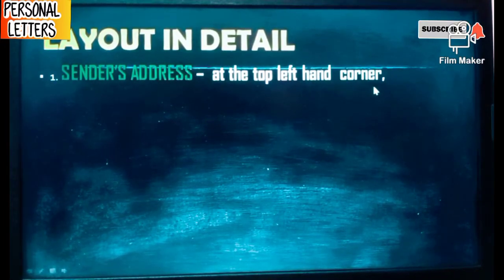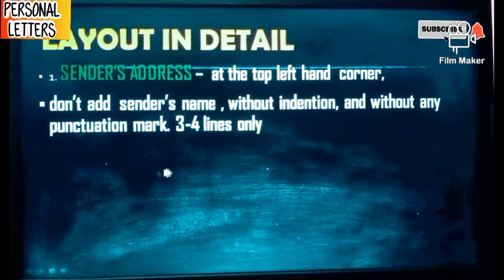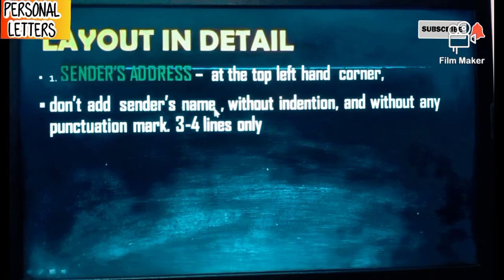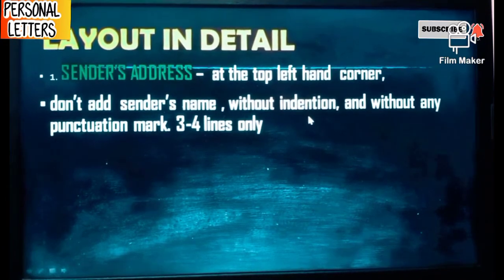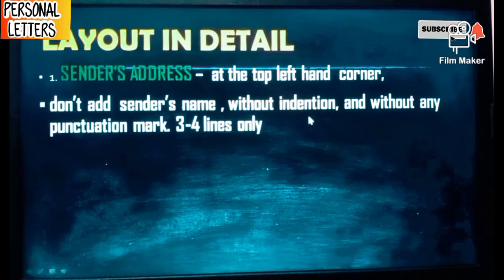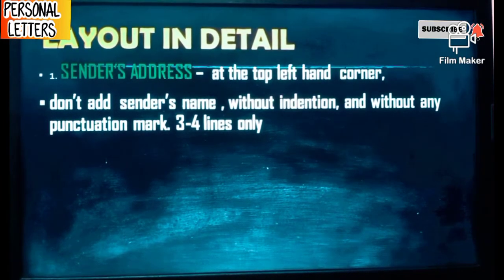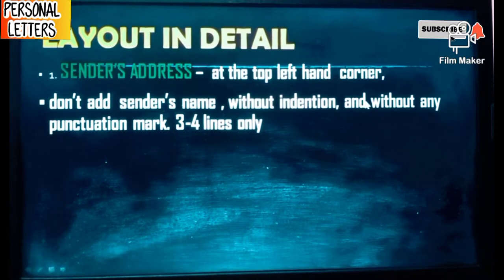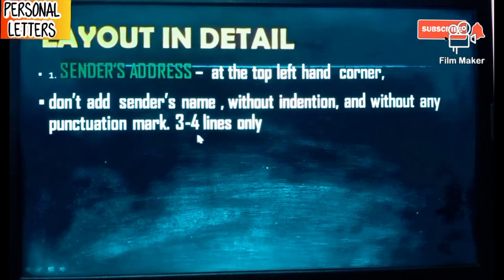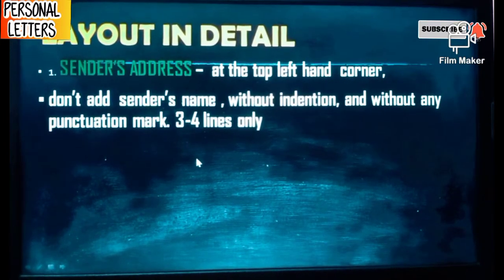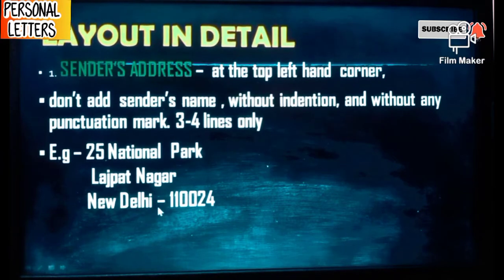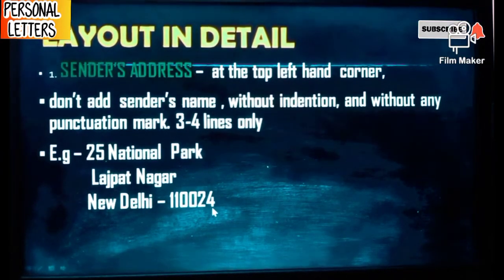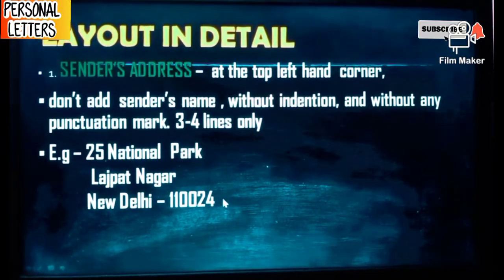At the top left-hand corner, you should write the sender's address. When writing the sender's address, do not add the sender's name — no name should appear there. It is better written without punctuation marks, though using punctuation marks is also acceptable. The address should be in three to four lines only — not very lengthy and not very short. Example: 25 National Park, Large Patnagar, New Delhi 110024 — written without any punctuation marks.